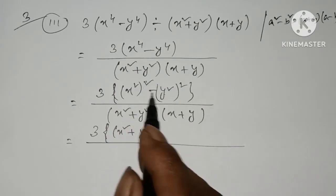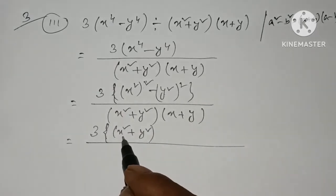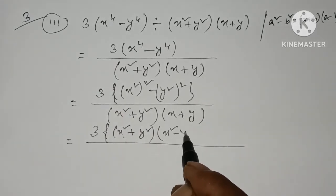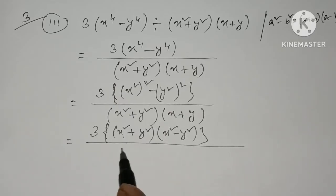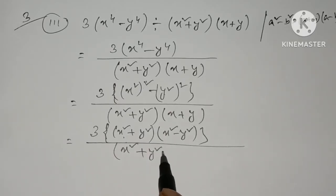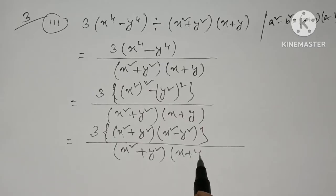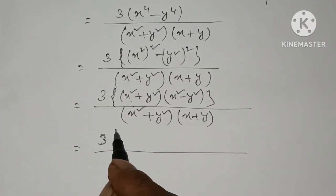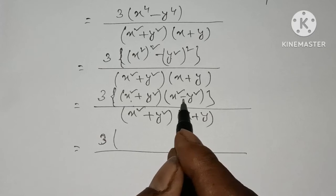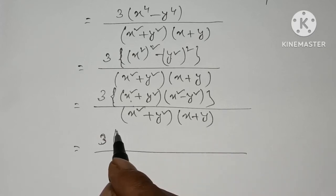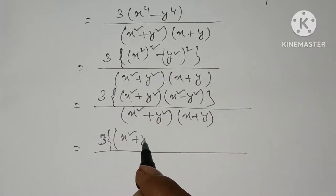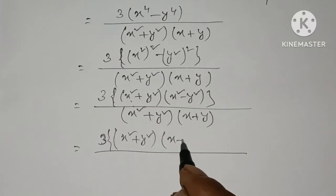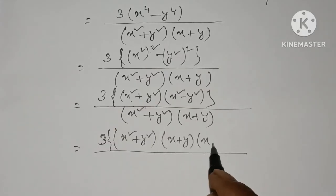The identity: A plus B into A minus B gives A² minus B². Similarly, A² plus Y² and the goal of X plus Y. Here we have 1 plus B into A minus B, giving X² plus Y², whole into X minus Y.